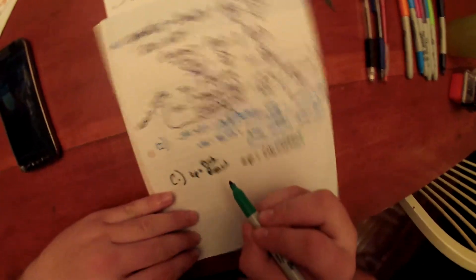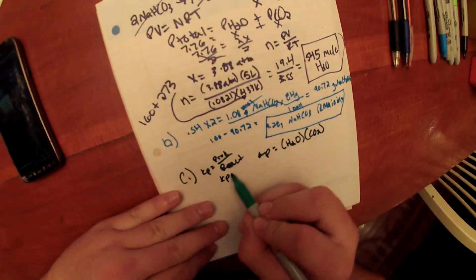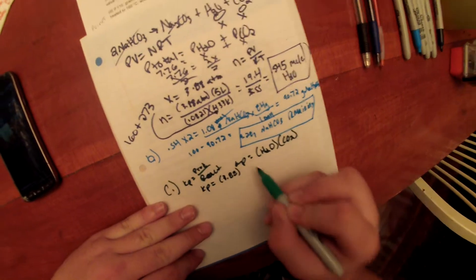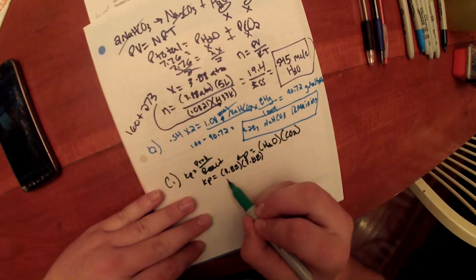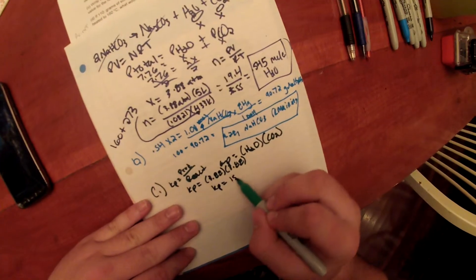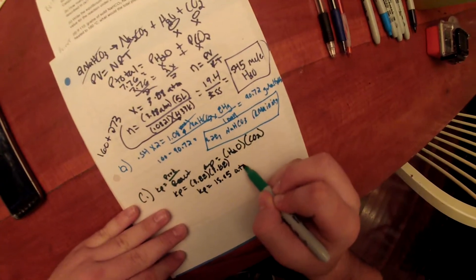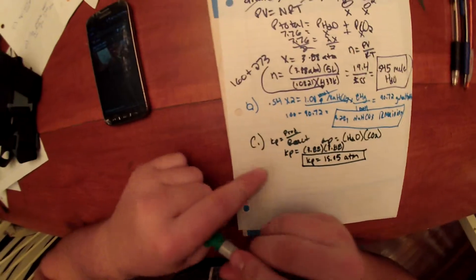And we know the values of these, which are 3.88. So, we do Kp equals 3.88 times 3.88. So, our value for a Kp expression is 15.05 ATMs squared. And that is our final answer.